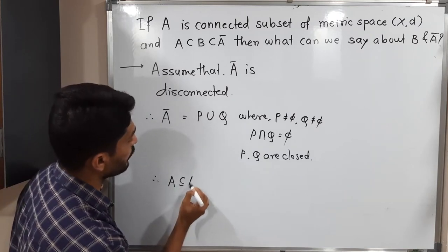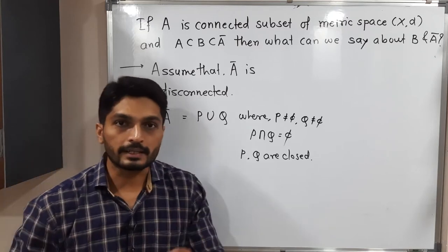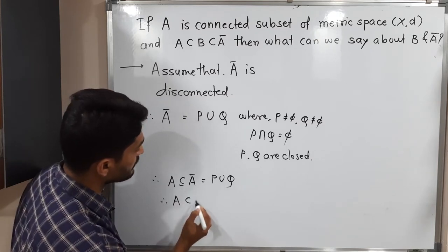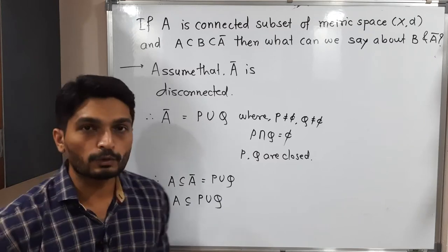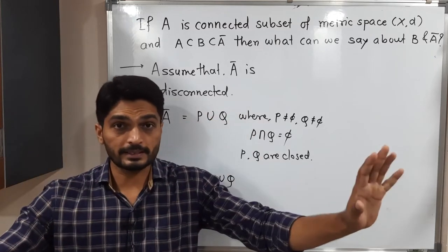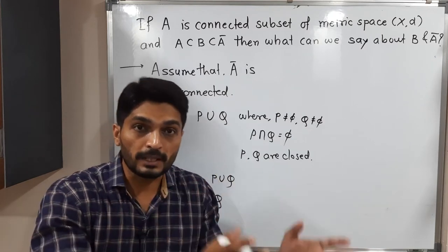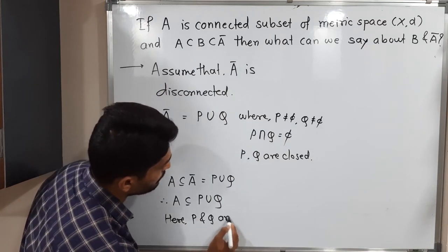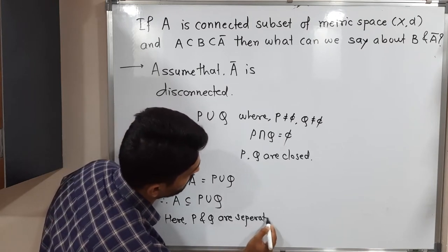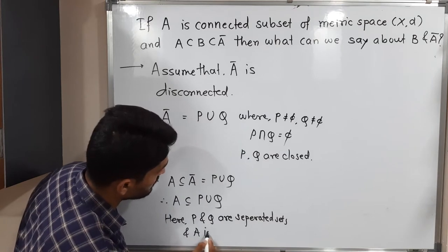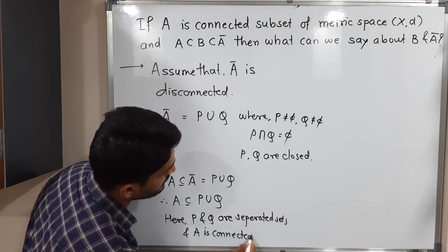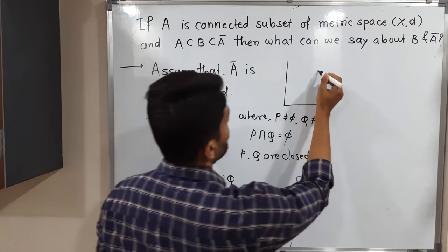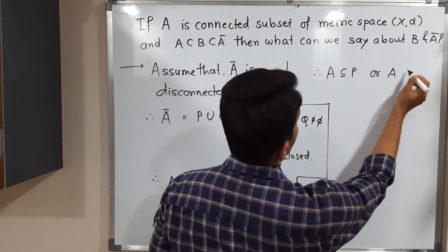We know that A ⊆ Ā, and Ā = P ∪ Q, so A ⊆ P ∪ Q. Now, P and Q are separated sets and A is connected. Therefore, either A ⊆ P or A ⊆ Q. This follows because a connected set cannot be split across two separated sets.